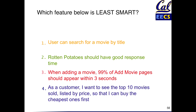So which SMART letters are these stories violating? Search for a movie by title — that's not too bad. The worst one is 'Rotten Tomatoes should have good response time' — it has the word 'good' in there, which is in the eye of the beholder. Three and four are pretty specific: 99% of the movies in less than three seconds is very specific and measurable, and it lays out who the stakeholders are.